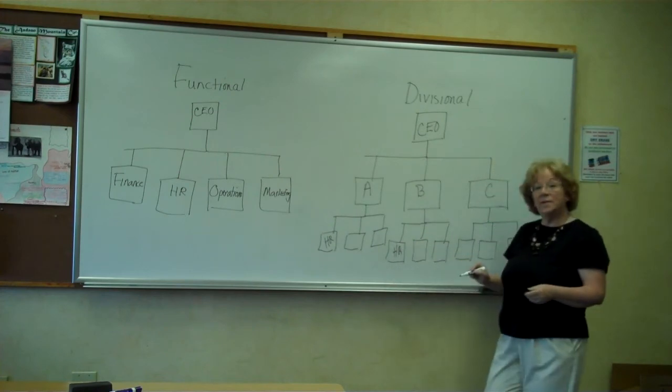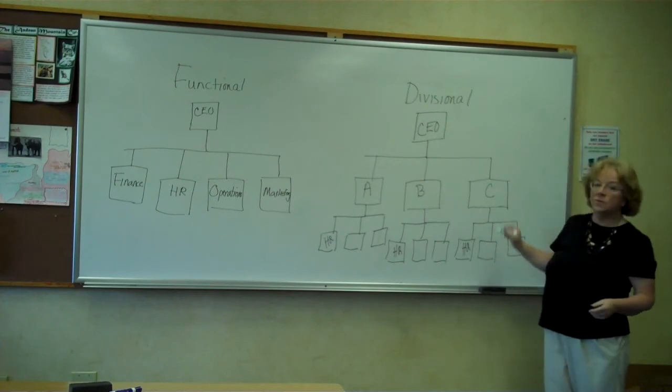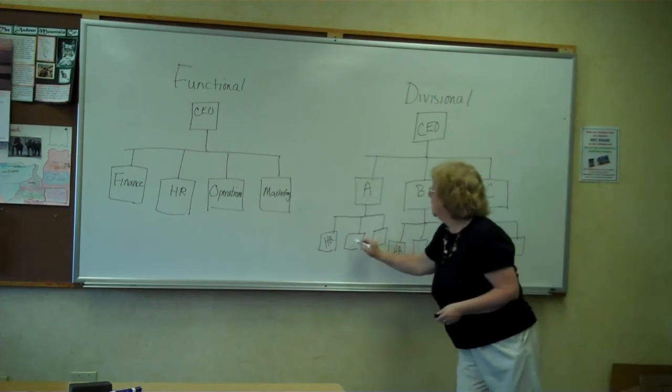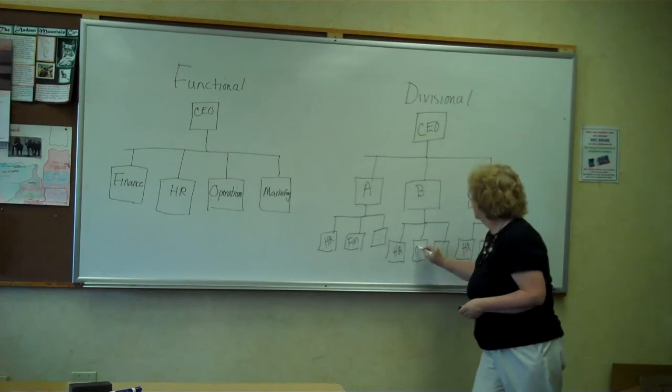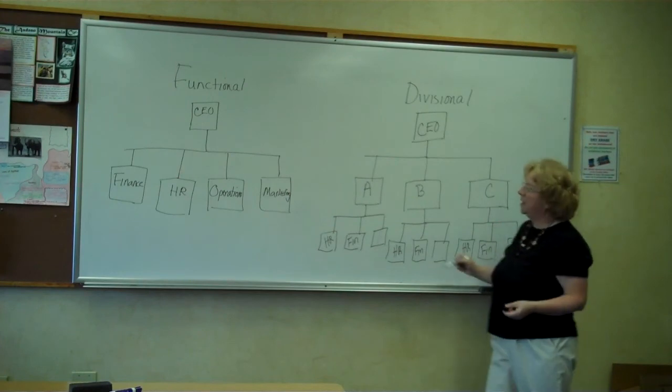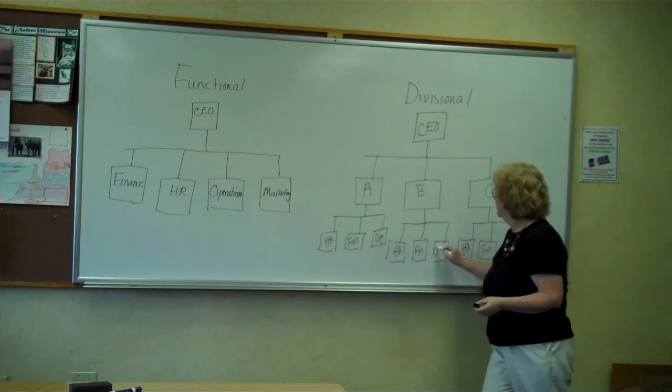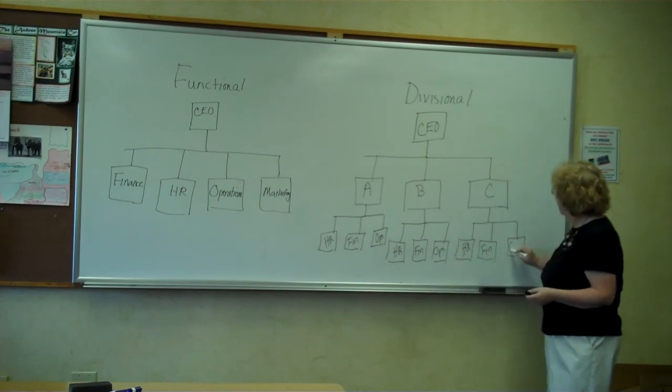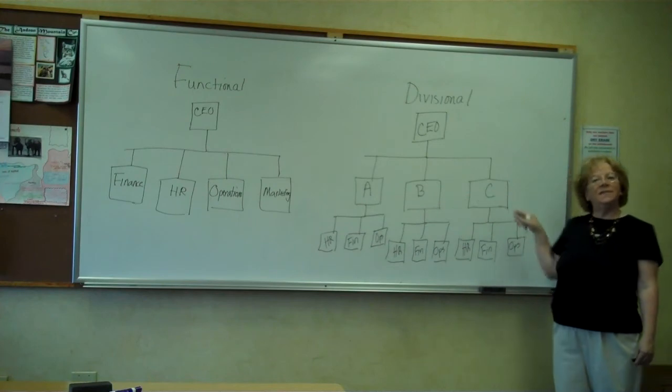So again, I'm just using a few as examples. So each of these divisions would have HR. Each might have finance. And each might have operations. So what makes these divisions?